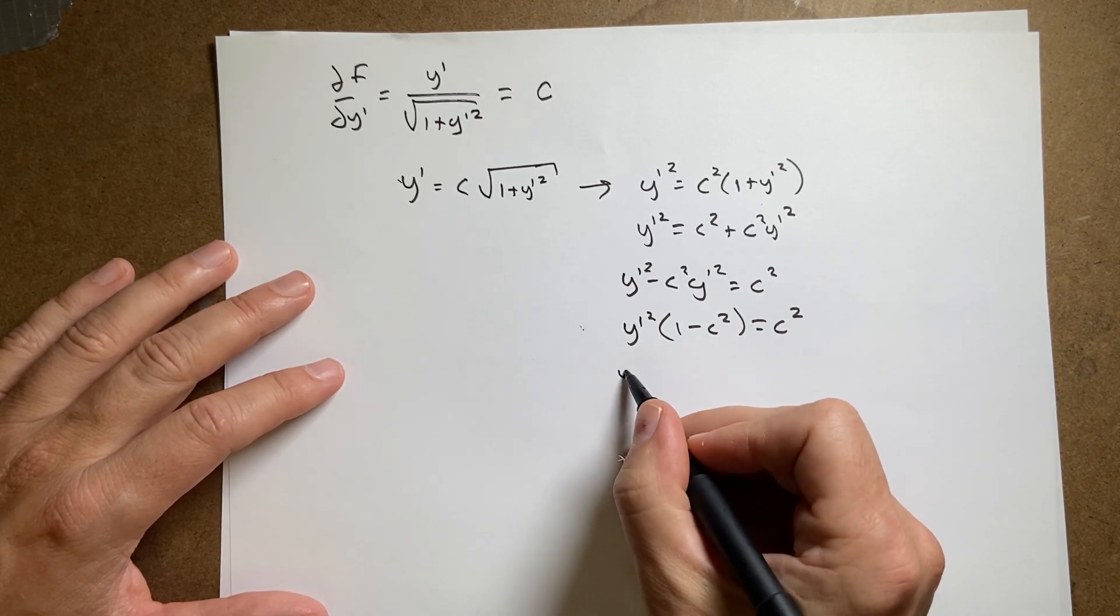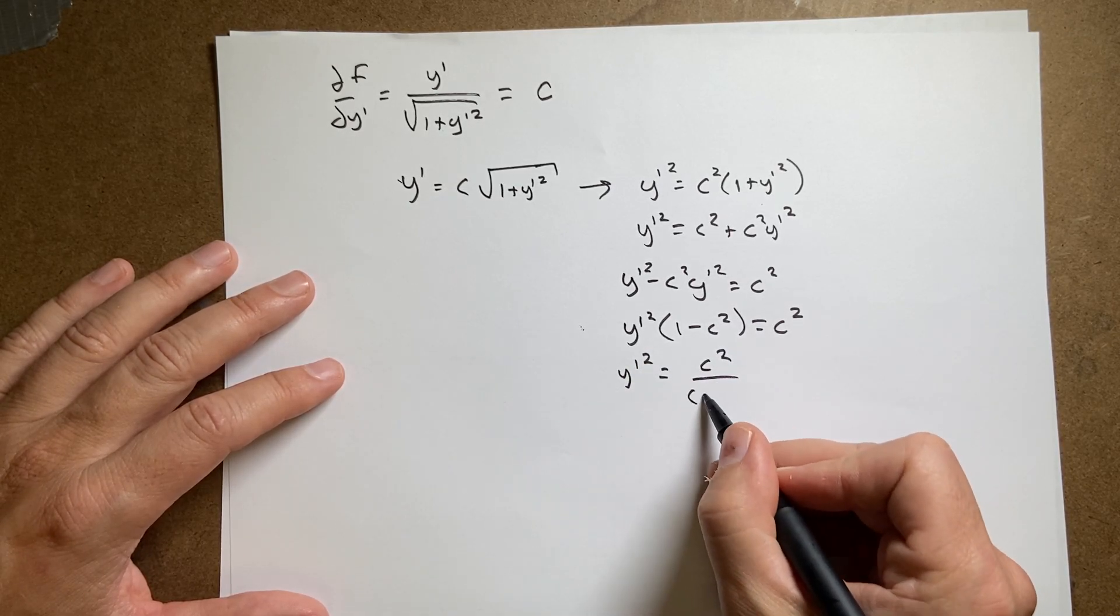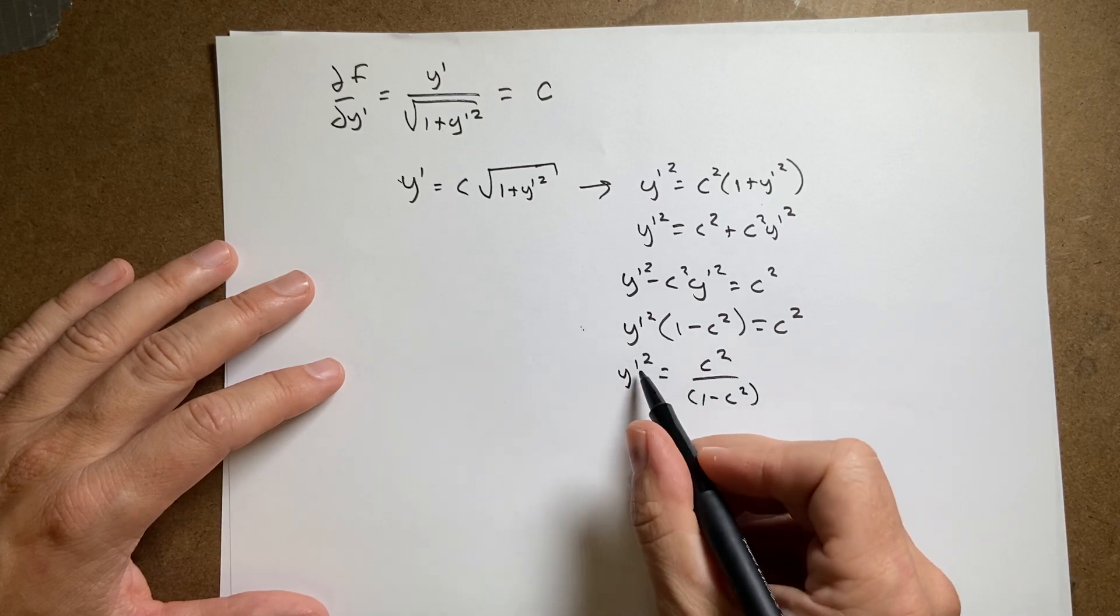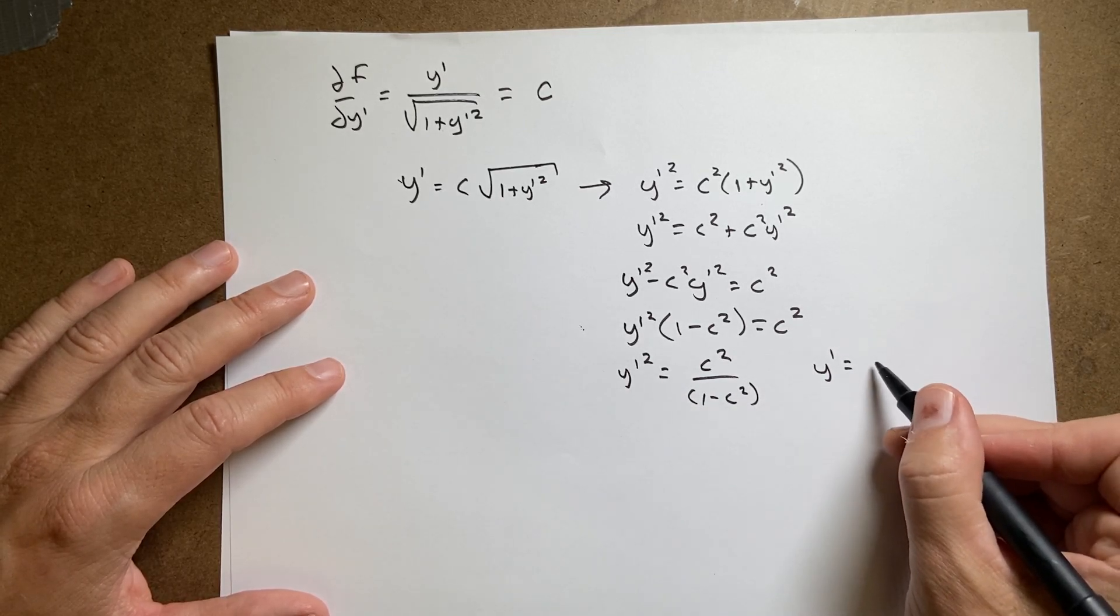And now I'm going to divide both sides by this, y prime squared equals c squared over 1 minus c squared, and then I take the square root, y prime equals a constant, I'm going to call it k.